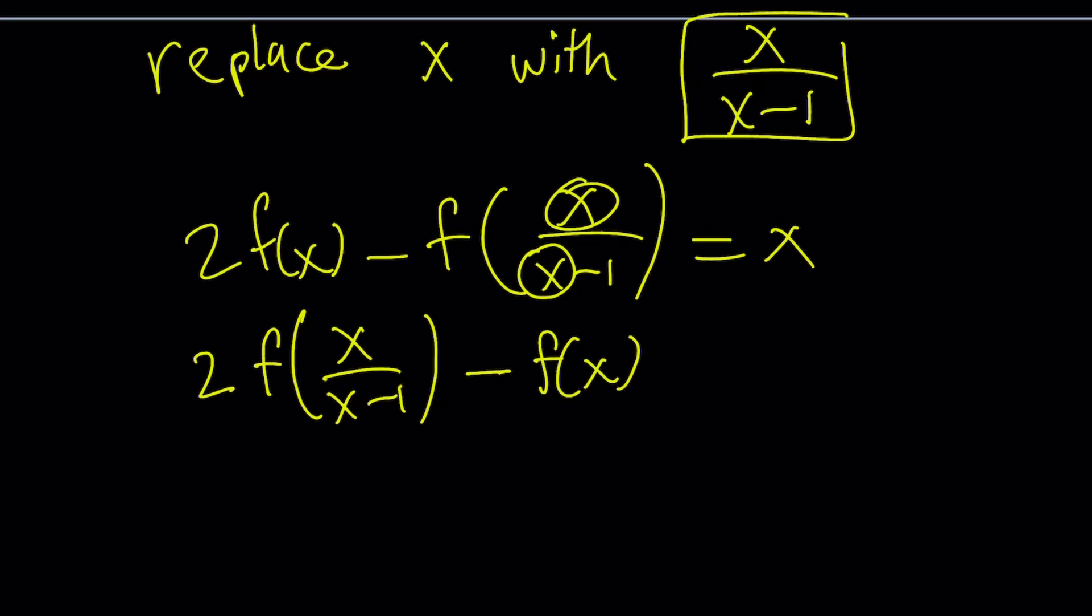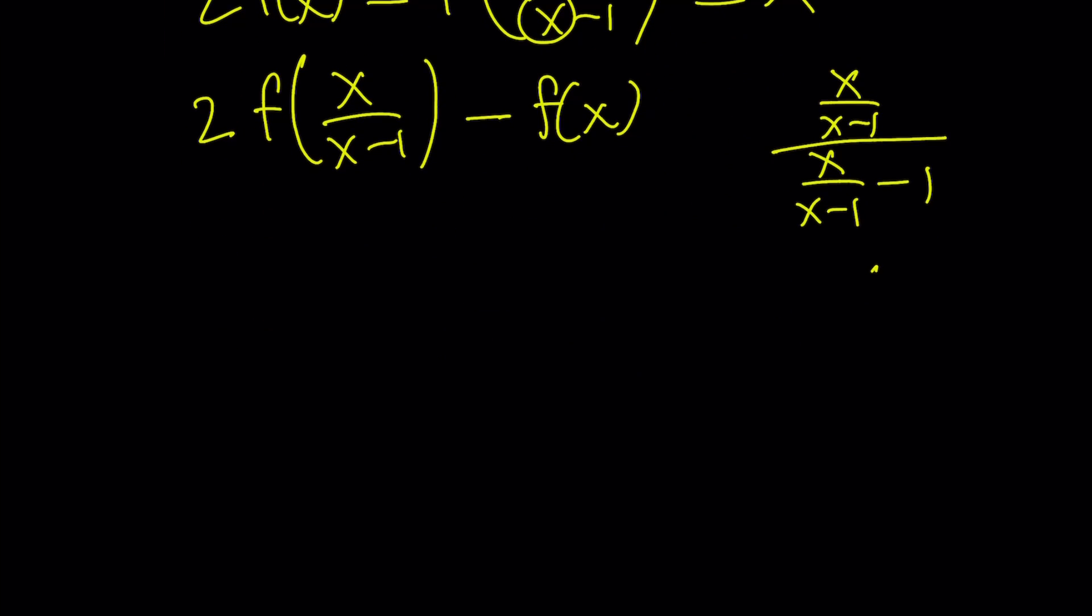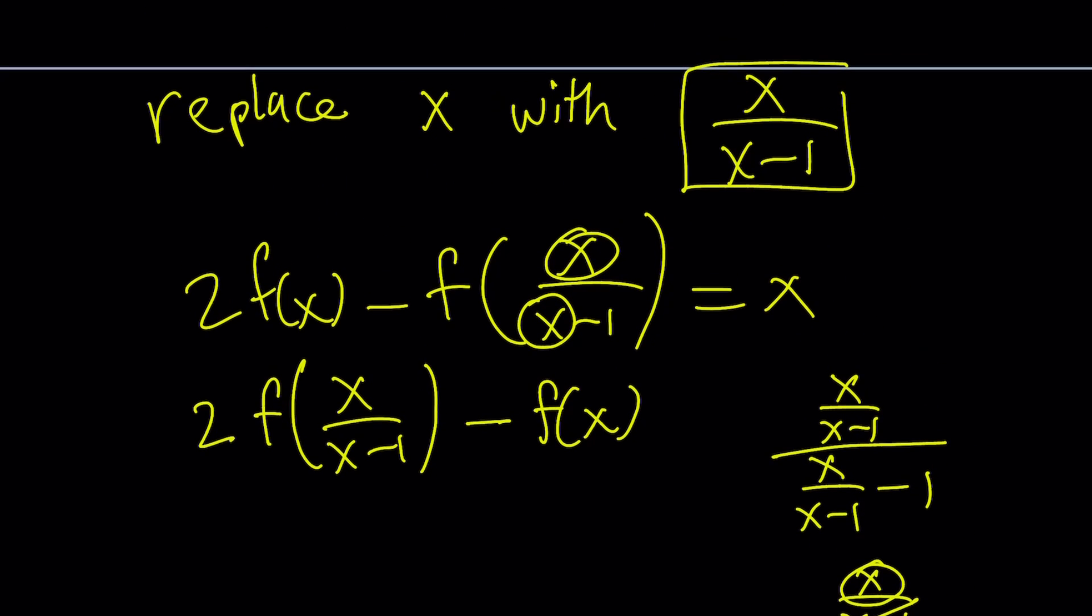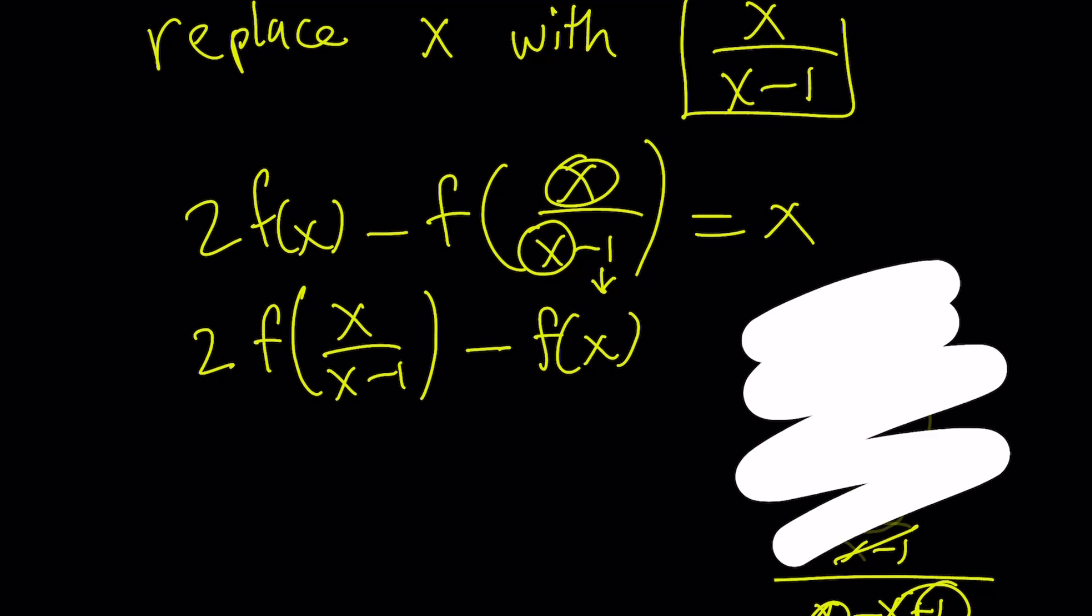But if you wanted to test it out, I can show you real quick. Replace x with x over x minus 1 here and here. That's going to give us the following. We can make a common denominator: x over x minus 1 divided by x minus x plus 1 over x minus 1. x minus 1 cancels out, x cancels out, and we end up with x over 1, which is x. That's why this just turns into x when we replace x with x over x minus 1.